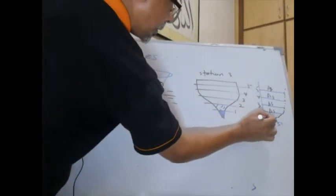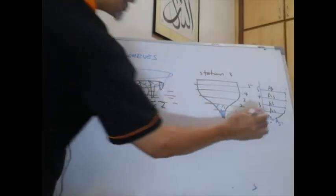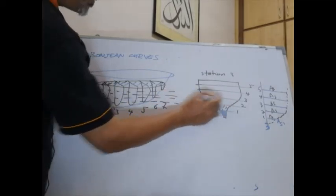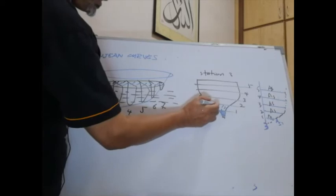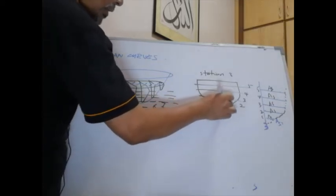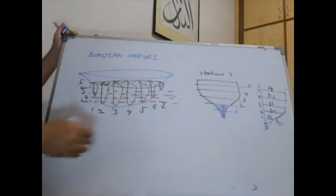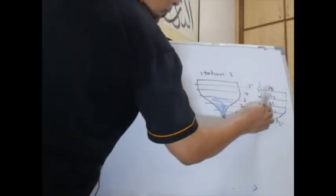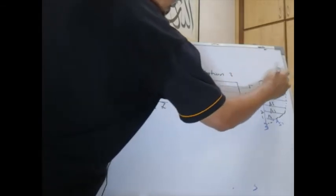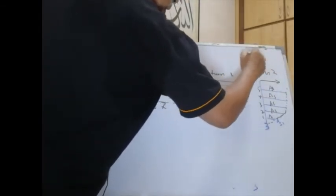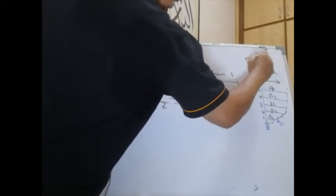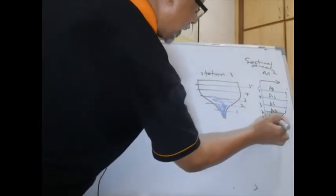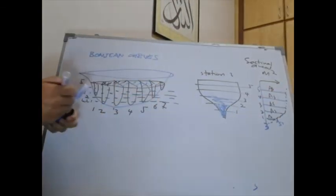We plot it as one line for the area — for example, 2 square metres. Then we go to the next waterline, waterline 2, and again up to waterline 2 we calculate the area, and we plot it on the curve. We go on for the rest of the waterlines. From there, we plot the area, which is of course in square metres, and we can label it as sectional area in square metres. Those lines are showing the area of the section up to that waterline from the baseline.